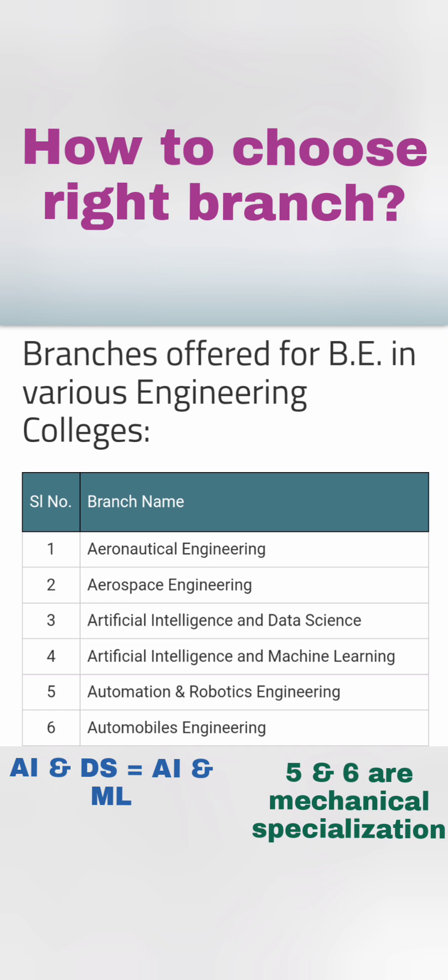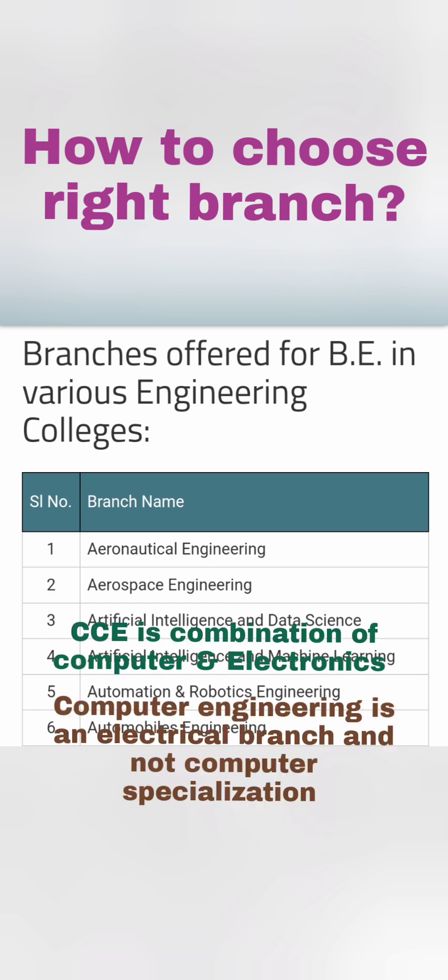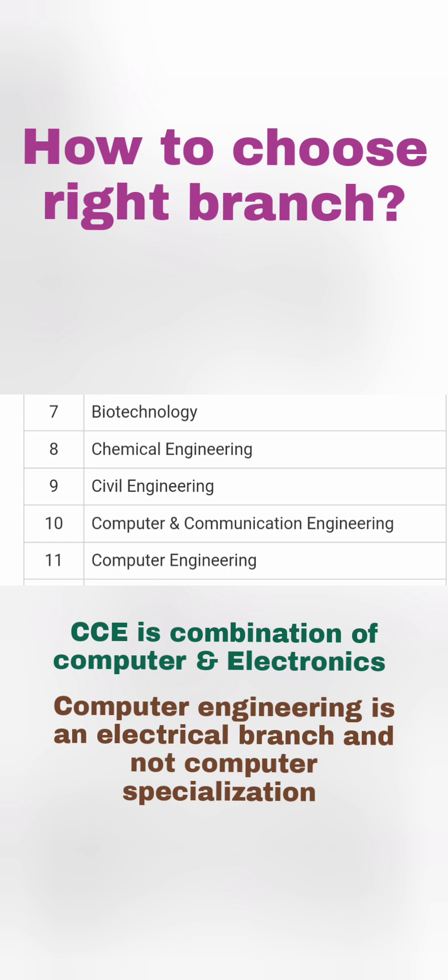Automation and Robotics and Automobile Engineering are mechanical specialization branches — you will get jobs in the mechanical automation space. Biotechnology, Chemical, and Civil are core or traditional branches that have already existed for a long time.